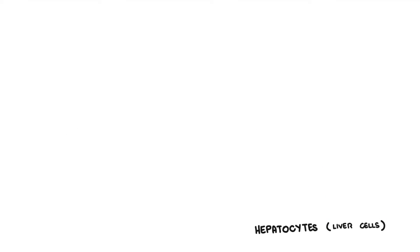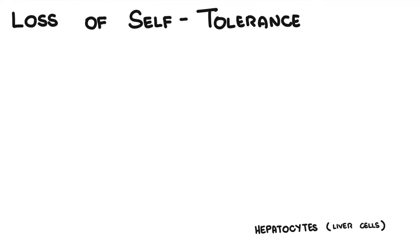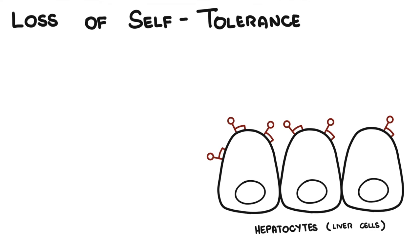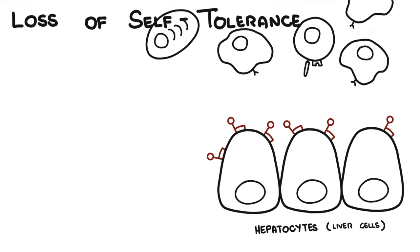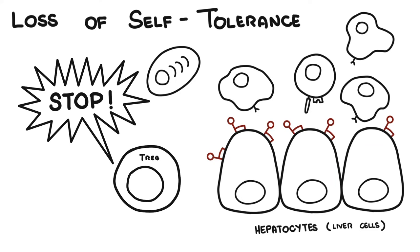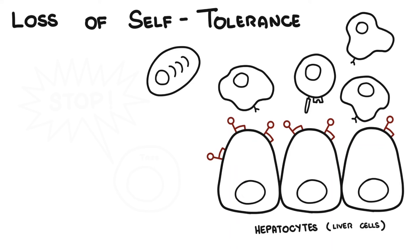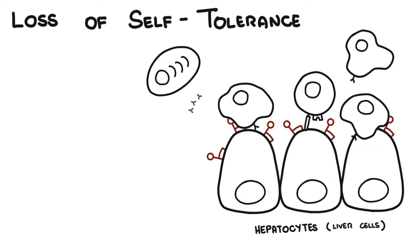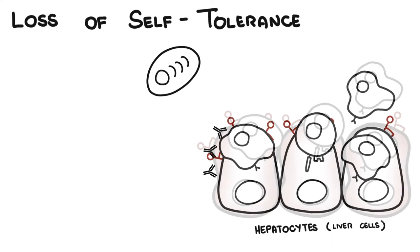The final major theory is loss of self-tolerance. Normally, everyone has some immune cells that target their own tissues, but there are usually mechanisms in place to prevent these cells from causing harm. The specific cell here is the T regulatory cell. When this regulatory mechanism fails, it can contribute to the development of autoimmune diseases such as autoimmune hepatitis.